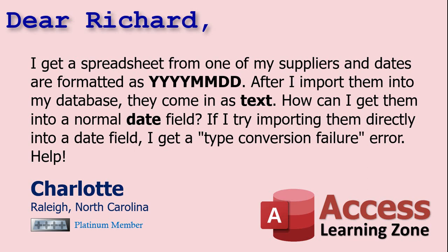Charlotte says: I get a spreadsheet from one of my suppliers and dates are formatted YYYYMMDD. I see this a lot. After I import them into my database they come in as text. How can I get them into a normal date field? I try importing them directly into a date field and I get a type conversion failure error. That's going to happen because Access doesn't recognize that as a valid date format, so we just have to do a little massaging with some string functions to make that look like a normal date and then convert it to a date using one of the type conversion functions.